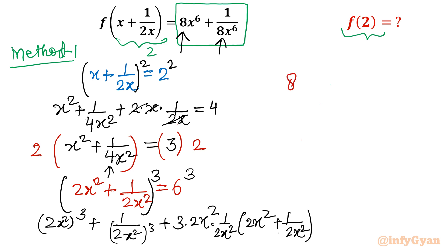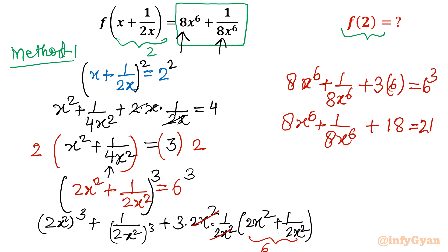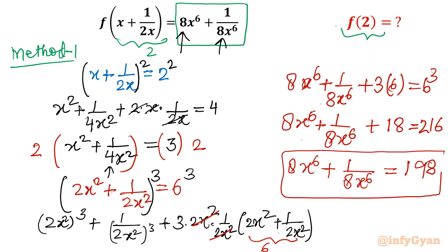Expanding: (2x²)³ = 8x⁶, and (1/2x²)³ = 1/8x⁶. The second term: 3·(2x²)·(1/2x²) = 3, and the bracket (2x² + 1/2x²) = 6. So we get 8x⁶ + 1/8x⁶ + 3·6 = 6³ = 216. That gives 8x⁶ + 1/8x⁶ + 18 = 216, so 8x⁶ + 1/8x⁶ = 216 - 18 = 198. This is Method 1, and the key moment is knowing to multiply by 2.